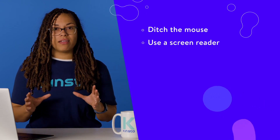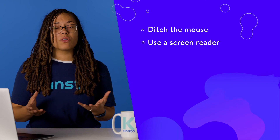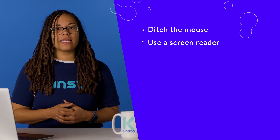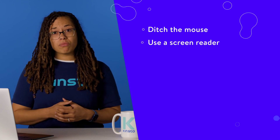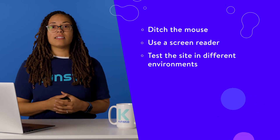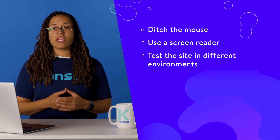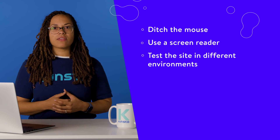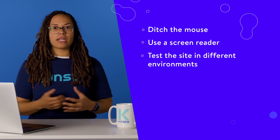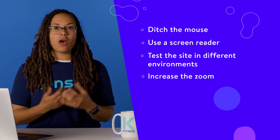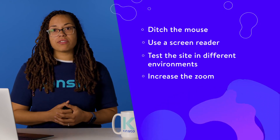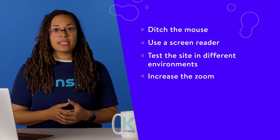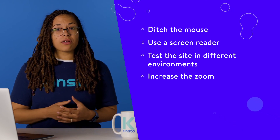Use a screen reader — put yourself in the shoes of someone who has low or poor visibility. Use a screen reader app or website and review the content on your site to ensure it still makes sense and sounds smooth when read aloud. Test the site in different environments — go somewhere with public Wi-Fi to make sure your site loads properly without a high-quality internet connection. Take note of areas of the site that lag or disappear altogether with a poor connection. Increase the zoom — open up your site in a browser and use the browser settings to zoom in 200%. Can you still use, navigate, and engage with the site? Is there content that disappears or gets cut off?